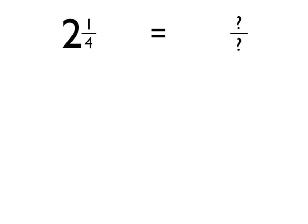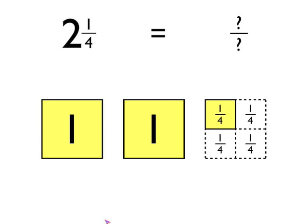Let's have a look and see how we would convert this mixed number, two and a quarter, into an improper fraction. The first thing that I do is I'm going to represent this mixed number, two and one quarter, using this diagram, as you can see here.